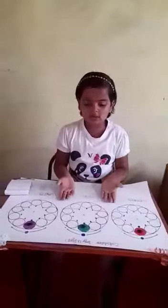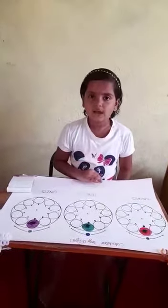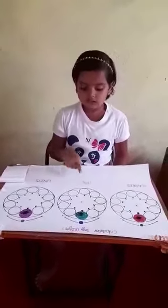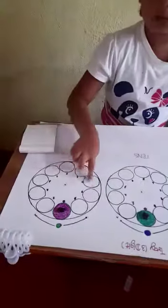This is a calculator for 3-digit numbers. We can use addition and subtraction. There is unit, tens, and hundreds. All numbers start from 0 to 9.